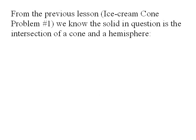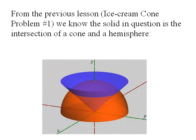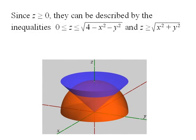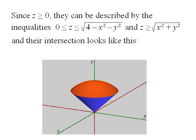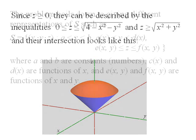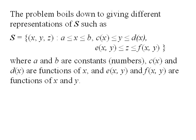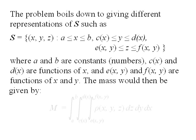From the previous lesson, ice cream cone problem number one, we know the solid in question is the intersection of a cone and a hemisphere. Since z is greater than or equal to 0, the solid can be described by the inequality z between 0 and the square root of 4 minus x squared minus y squared, and z greater than or equal to the square root of x squared plus y squared. The problem boils down to giving different representations of the solid S, where x is between a and b, y is between two functions of x, and z is between two functions of x and y. The mass would then be given by this formula.